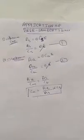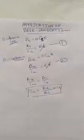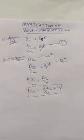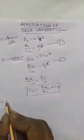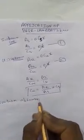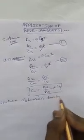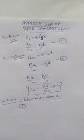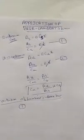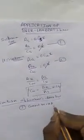This is one application of Beer-Lambert's law — to find out the concentration of an unknown solution. Now there are certain limitations of Beer-Lambert's law. The first limitation is that it is not obeyed and cannot be used for polychromatic light.